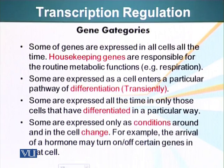There are some genes which are transiently expressed, meaning that at a specific time point in the life of a cell they are expressed. That generally happens when a cell is going to or starting to differentiate. So these are another category of genes.